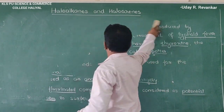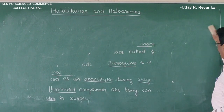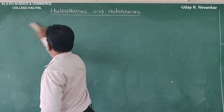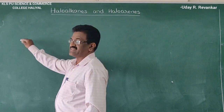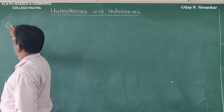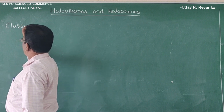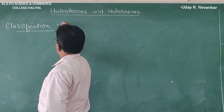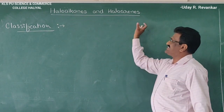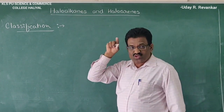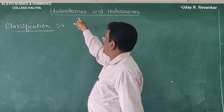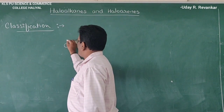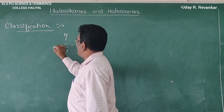Now let us see the classification of haloalkanes and haloarenes. The first classification is based on the number of halogen atoms present in a molecule. Haloalkanes are those compounds which are derivatives of alkanes in which a hydrogen atom is replaced by a halogen atom.